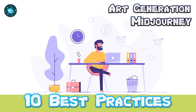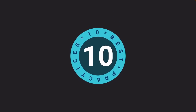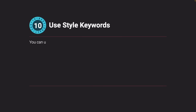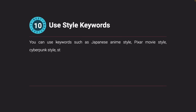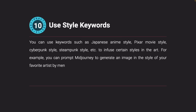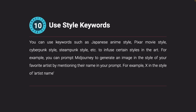Use style keywords. You can use keywords such as Japanese anime style, Pixar movie style, cyberpunk style, steampunk style, etc., to infuse certain styles in the art. For example, you can prompt Midjourney to generate an image in the style of your favorite artist by mentioning their name — for example: 'X in the style of [artist name].'